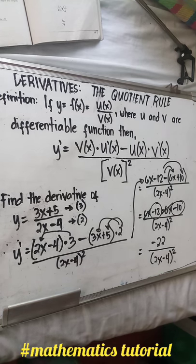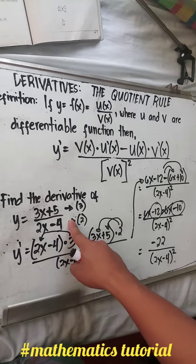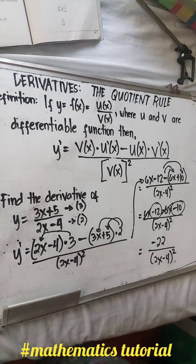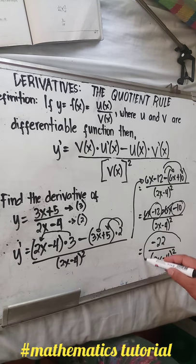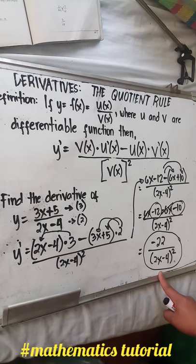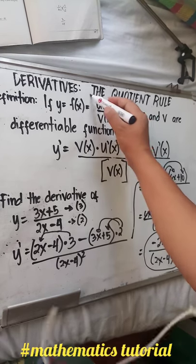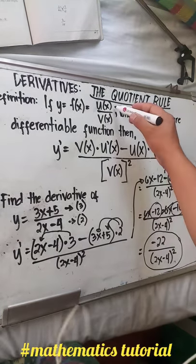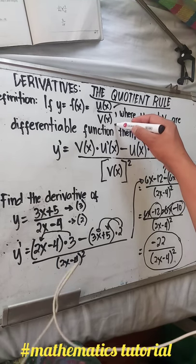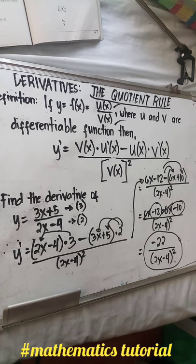So the derivative of the given function y equals (3x plus 5) over (2x minus 4) is negative 22 over (2x minus 4) raised to 2. That is the derivative using the quotient rule. Let u equal your numerator and let v equal your denominator. Thank you, everyone.